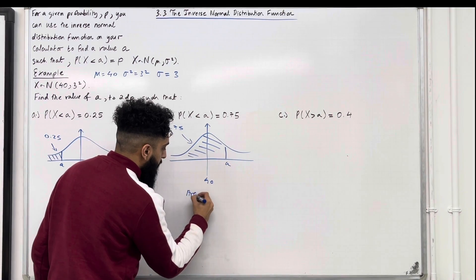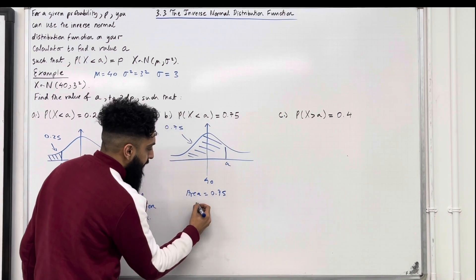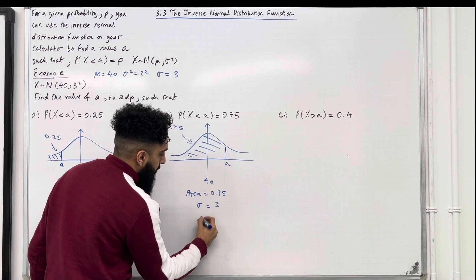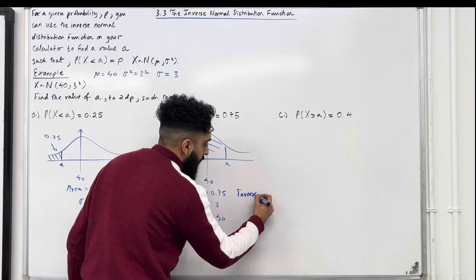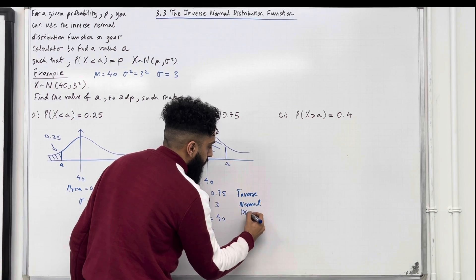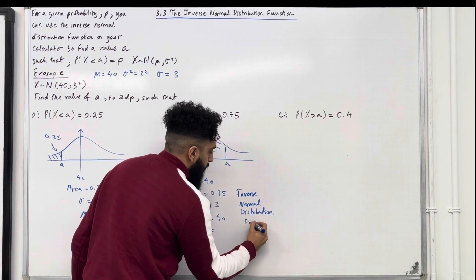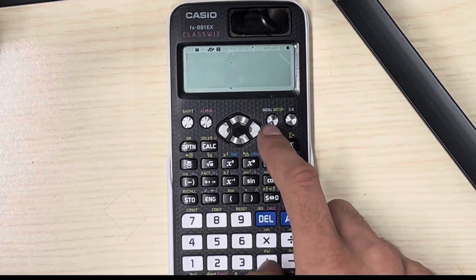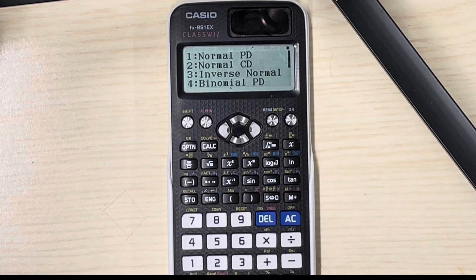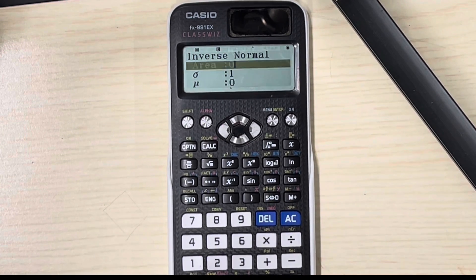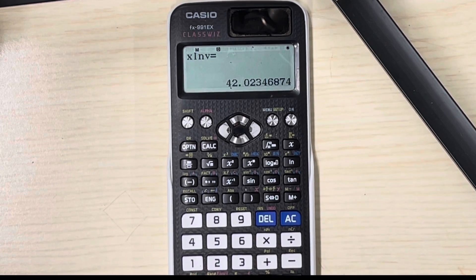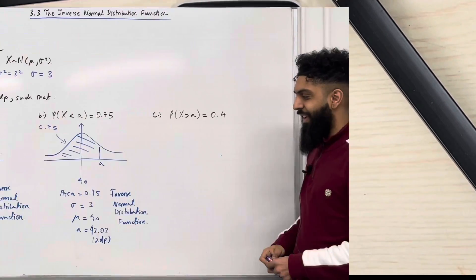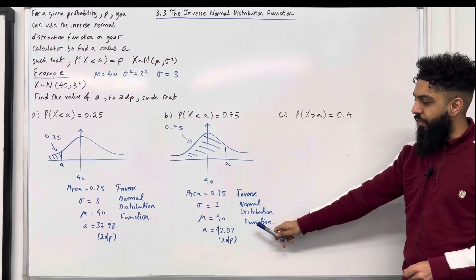So we've got that the area to the left of A is equal to 0.75, the standard deviation sigma is equal to 3, and the mean mu is equal to 40. Now we must calculate the value of A to two decimal places using the inverse normal distribution function. Press menu, go on to number 7, distribution, press equal. Press number 3, inverse normal. The area is 0.75, equal. The standard deviation is 3, equal. The mean is 40, equal. Press equal again and you get that A is equal to 42.02 to two decimal places.